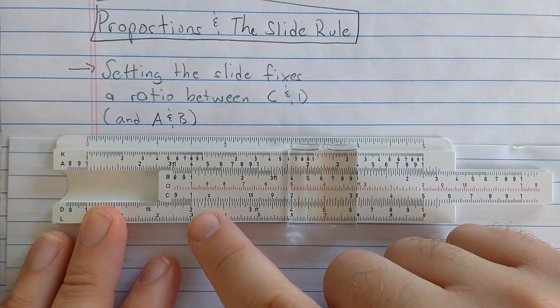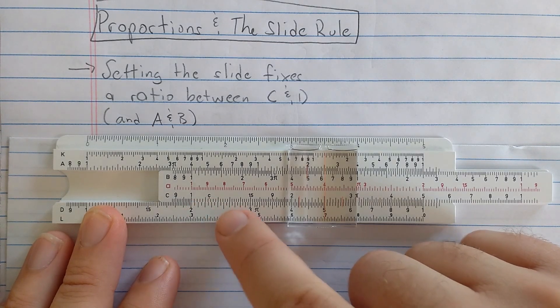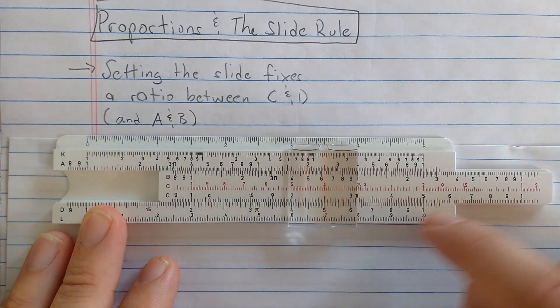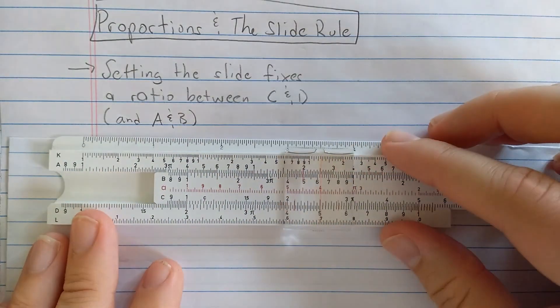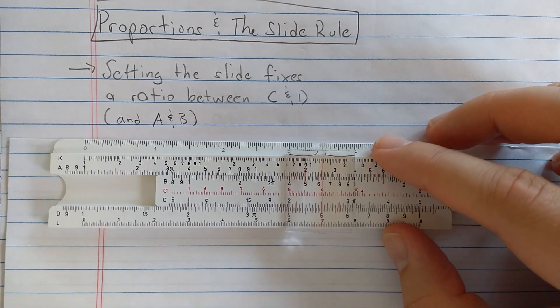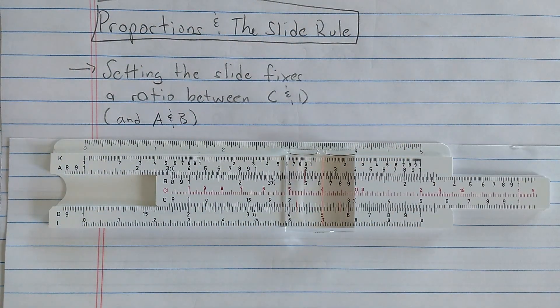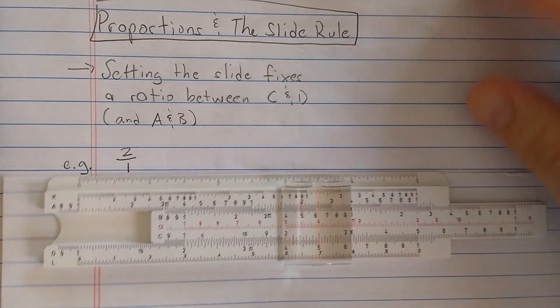Okay? So another way to think of that is you've set proportion 2 to 1, and it reads 2 to 1 everywhere. Since the A and the B scales are essentially just small versions of the C and the D scales, they have the same property. Okay, so we've looked at 2 to 1.